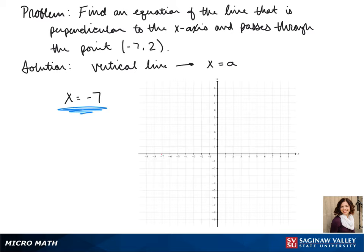To look at what our graph would look like, again we have 7, 2 and negative 7 is our x-intercept and it'd just be a vertical line.